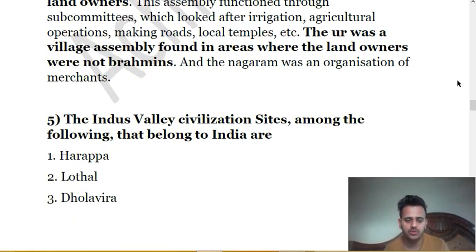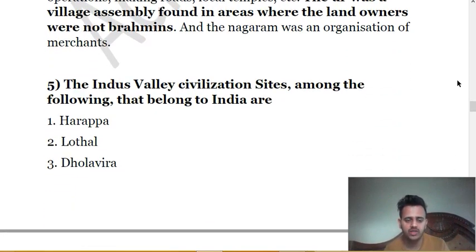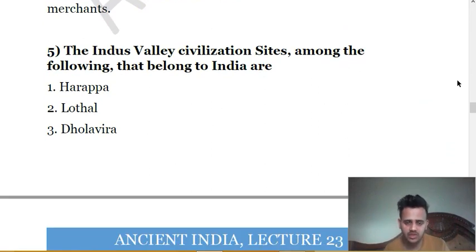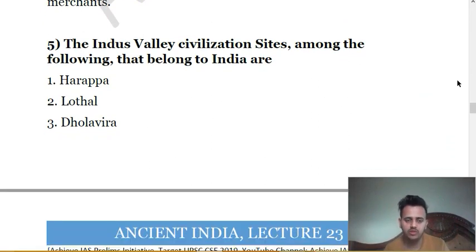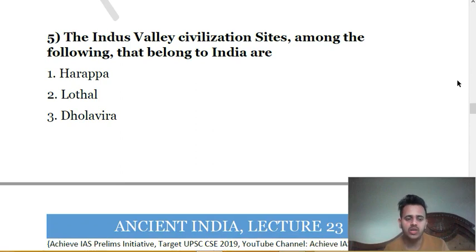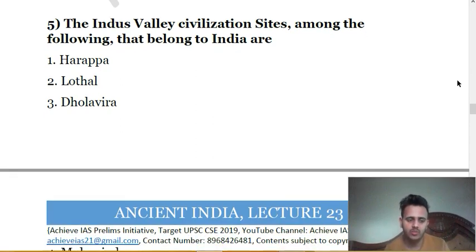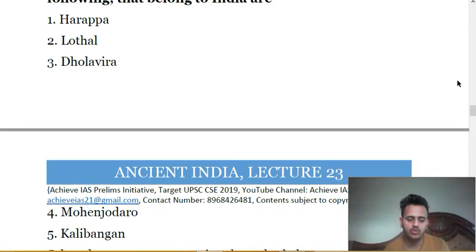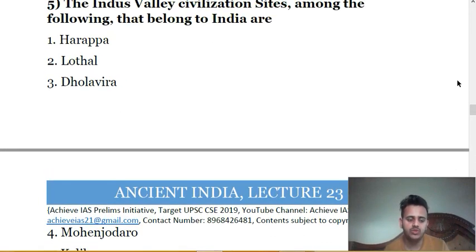Fifth question is quite easy. Among the following, which Harappan civilization sites belong to India? First, Harappa. Second, Lothal. Third, Dholavira. Fourth, Mohenjodaro. Fifth, Kalibangan. Harappa is certainly not in India — it is in Pakistan. Lothal is in India. Dholavira is also in India. Kalibangan is also in India. Mohenjodaro is in Pakistan.